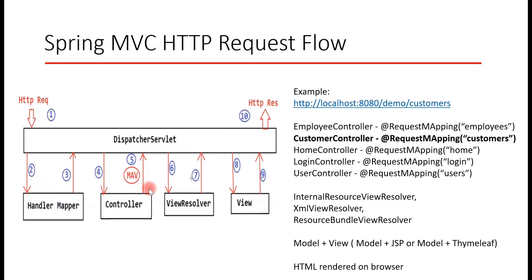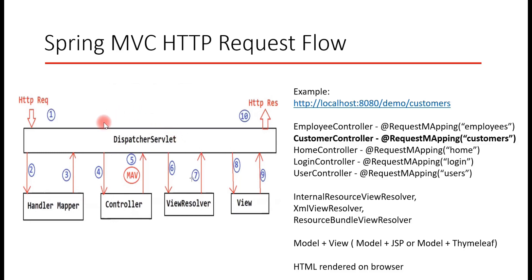So this is the typical flow in a Spring MVC application. All requests first come to the DispatcherServlet, which consults the HandlerMapper to identify the controller. The HandlerMapper identifies the controller and sends details back to the DispatcherServlet, which forwards the request to the controller. The controller creates a model and returns a model and view to the DispatcherServlet. The DispatcherServlet uses the ViewResolver to resolve the view location, then sends the view and model to the view component. The view component merges them, produces an HTML page, and sends it back to the browser for rendering.